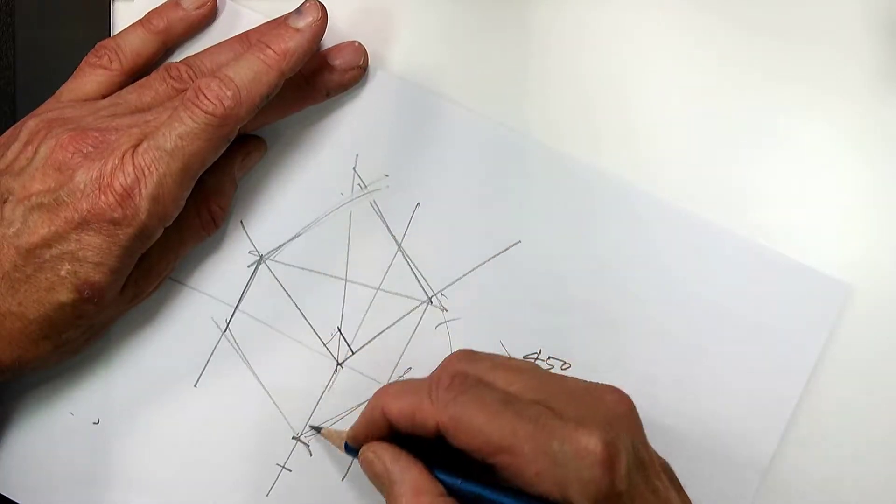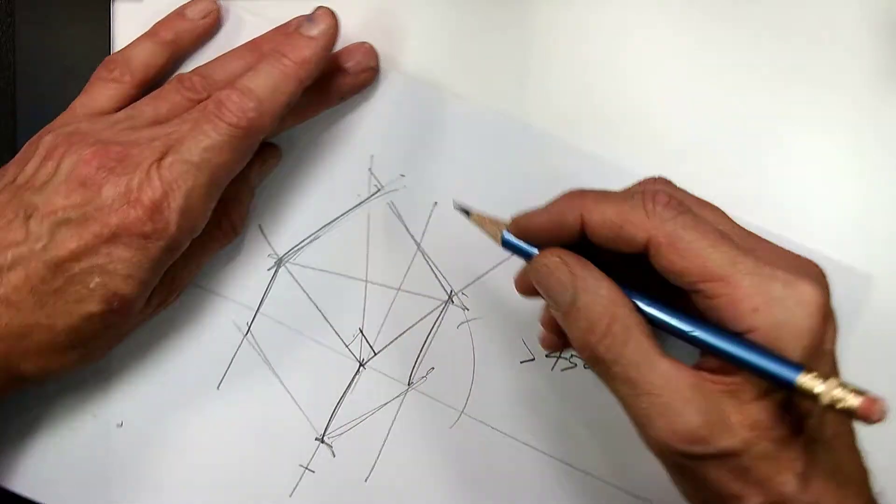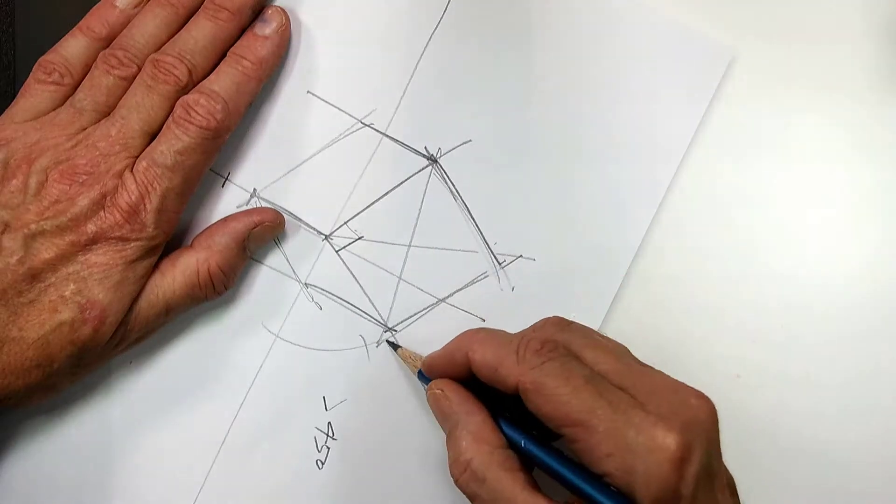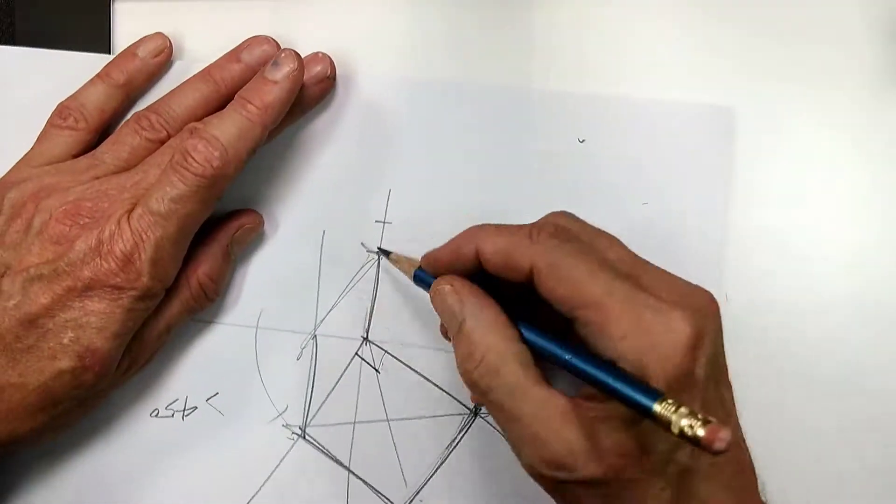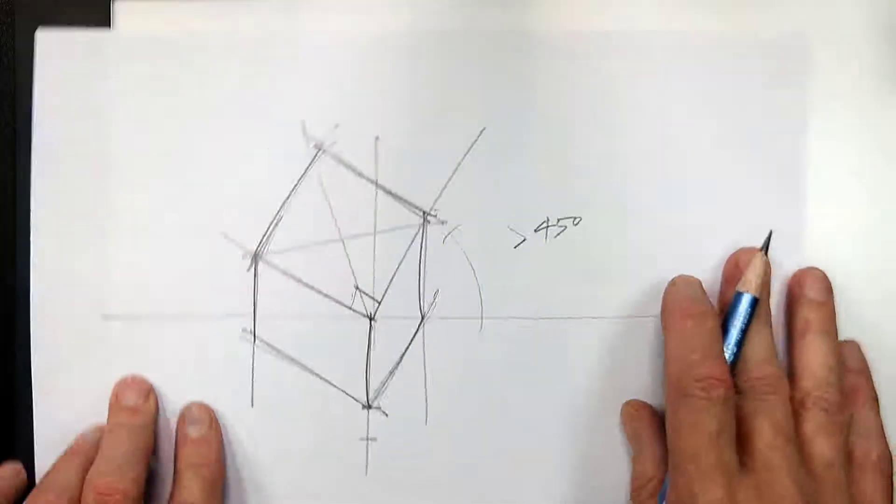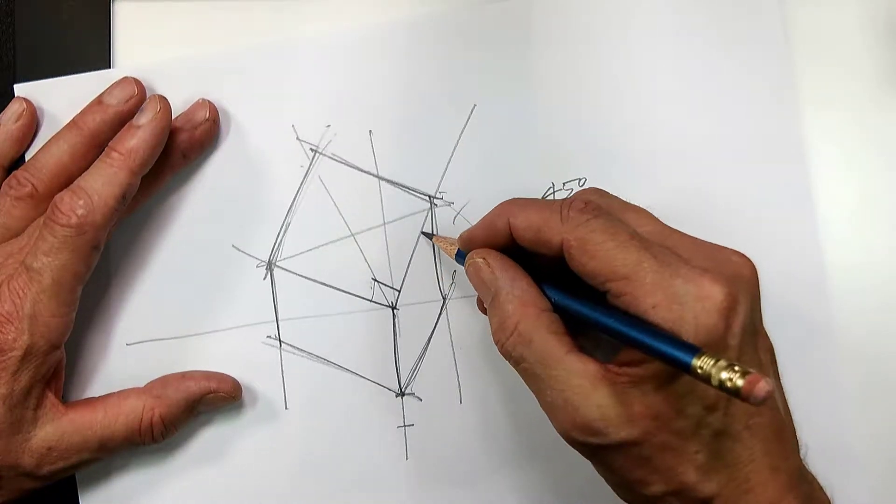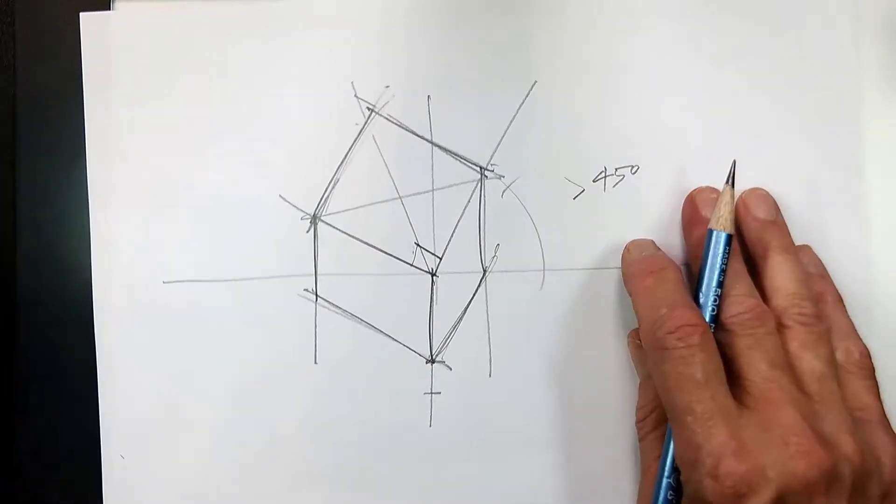All right. And now what I have here is a cube that is drawn in plan oblique but this angle here is greater than 45 degrees.